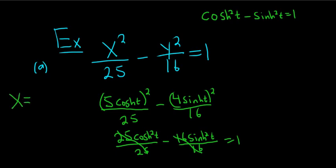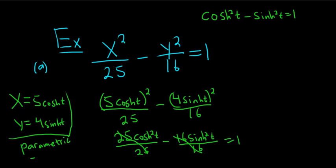So x is equal to 5 cosh t, and y is equal to 4 sinh t. So these would be the parametric equations for this hyperbola.